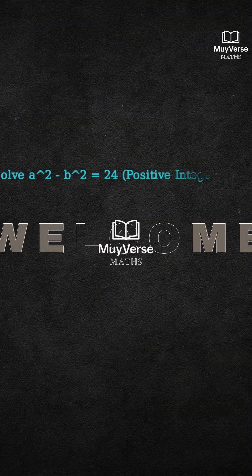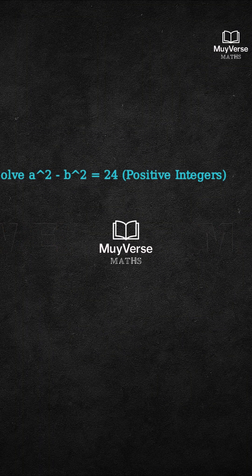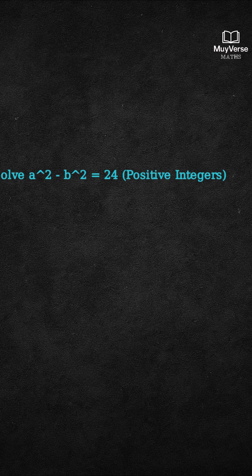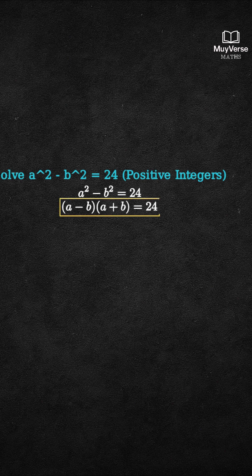We will solve the problem quickly and visually using the factorization of a squared minus b squared. Step 1: write a squared minus b squared as a product. A squared minus b squared equals 24, which factors into (a minus b) times (a plus b) equals 24.